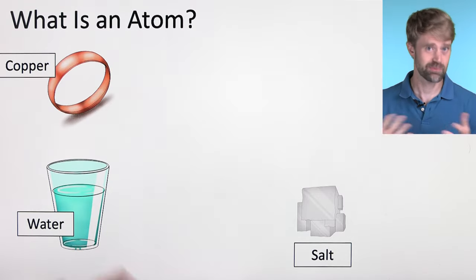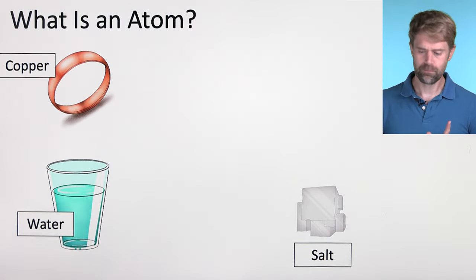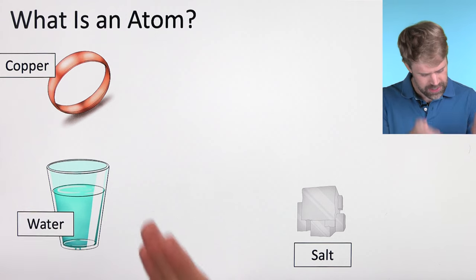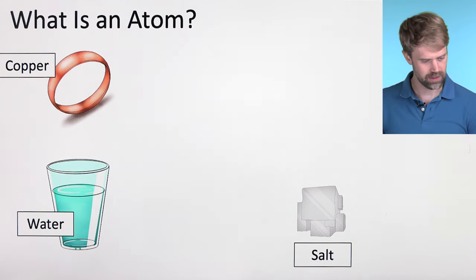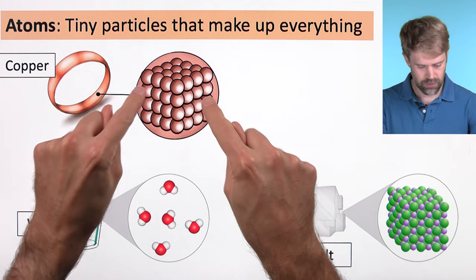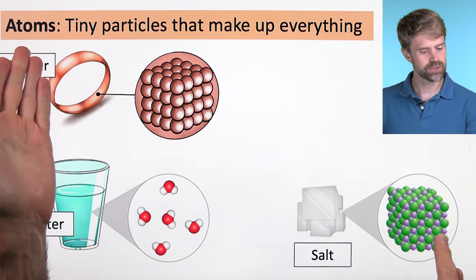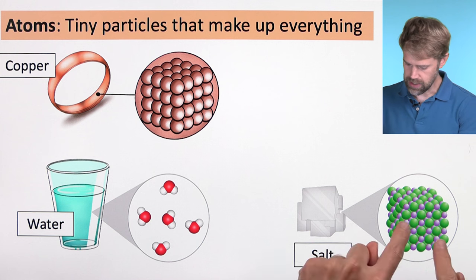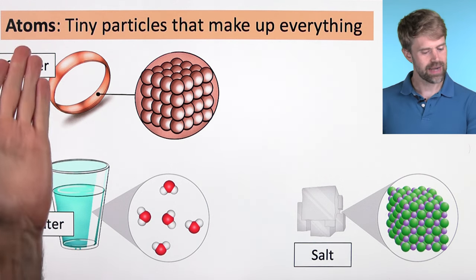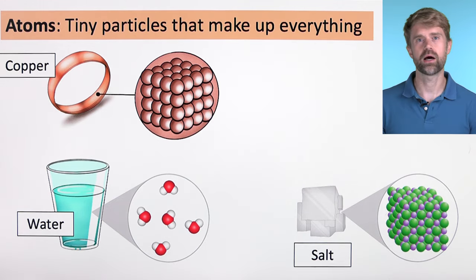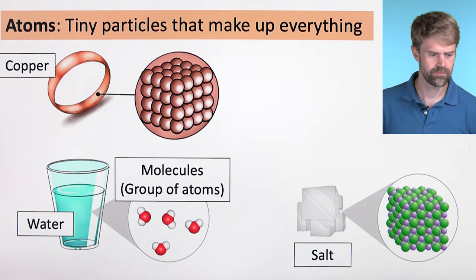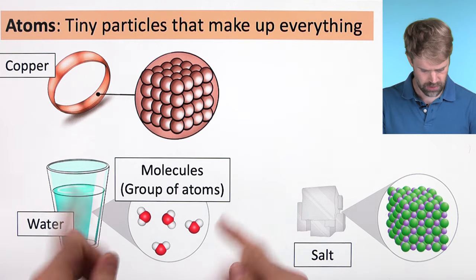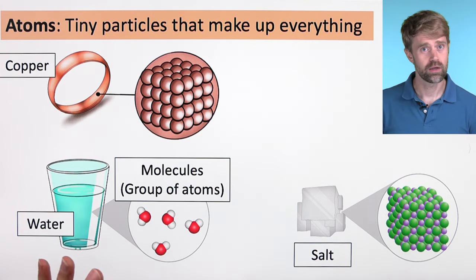Questions about atoms are some of the most common chemistry questions on the TEAS, so even if you don't remember anything about atoms from the last time you took chemistry, we'll start at the very beginning. What's an atom? Well, if you could zoom in zillions and zillions of times into anything, you'd see that it's made of tiny balls or particles called atoms. You can see this in the copper ring, the water in the glass, and in this grain of table salt. Atoms are tiny particles that make up everything.